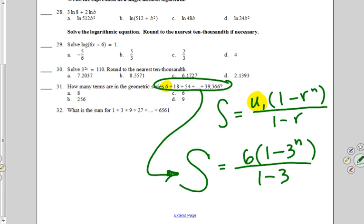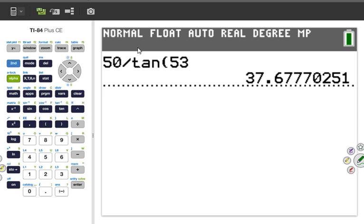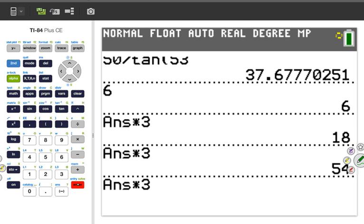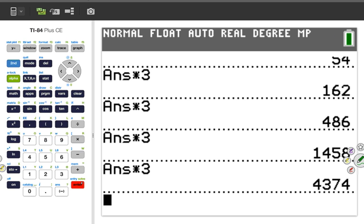One is to use the explicit formula for geometric, which is right below it. Another way is to go on your calculator and enter in the first term. Keep hitting enter, that's the third term, fourth term, 5, 6, 7, what are we looking for? 8, 9, when it gets to 39,366, what was I on? 9, it's the 9th term. So that's the answer. Using your calculator, that's called recursion.